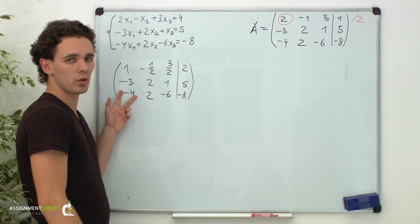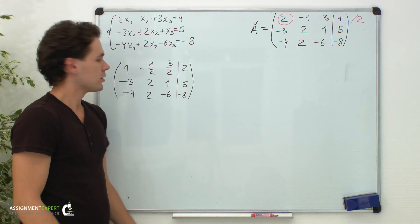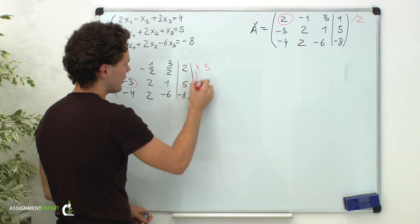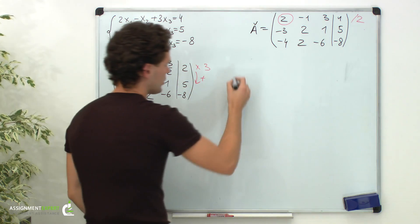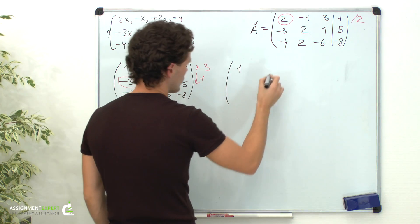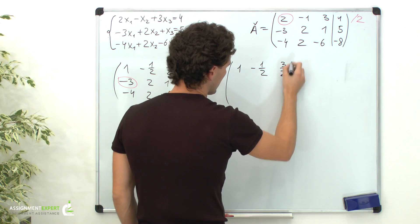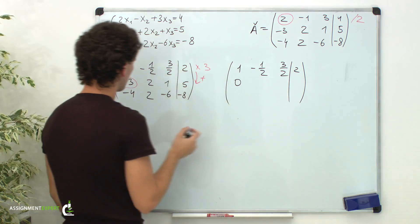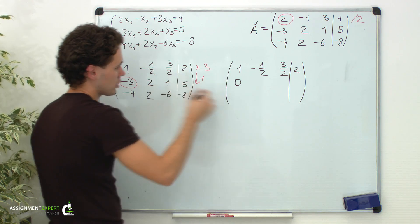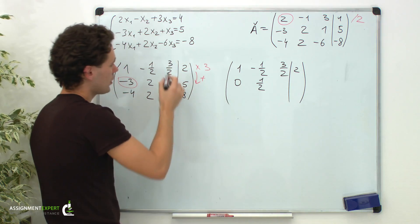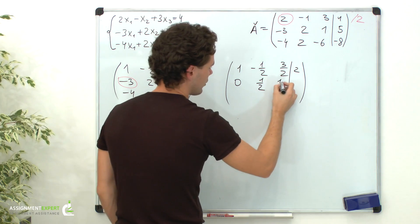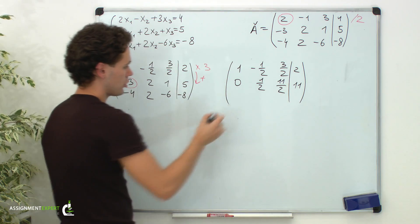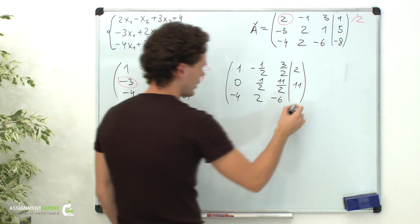Now we must eliminate x1 from all the equations except the first one. Let's begin with the second equation. To eliminate x1, we need to multiply the first row by 3 and add it to the second row. The first row remains unchanged: 1, negative 1 half, 3 halves, and 2. For the second row: 1 times 3 minus 3 equals 0; negative 1 half times 3 is negative 3 halves plus 2 equals 1 half; 3 halves times 3 is 9 halves plus 1 equals 11 halves; and 2 times 3 plus 5 equals 11. The third row stays unchanged: negative 4, 2, negative 6, and negative 8.